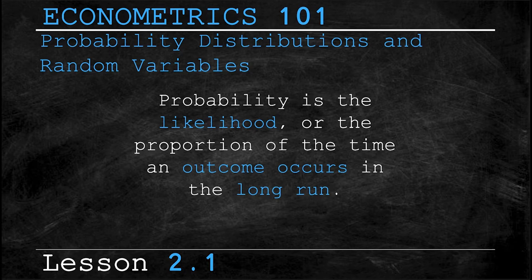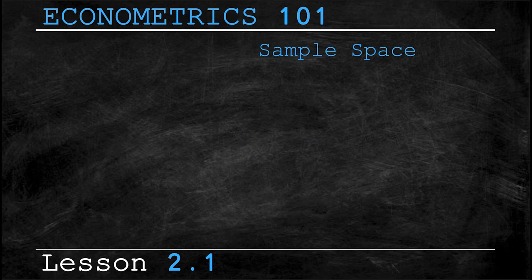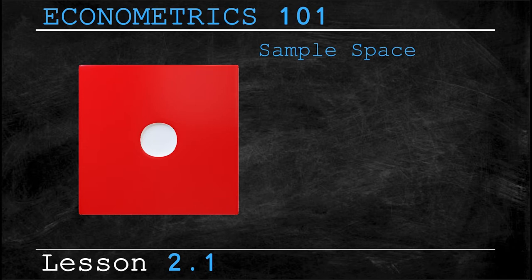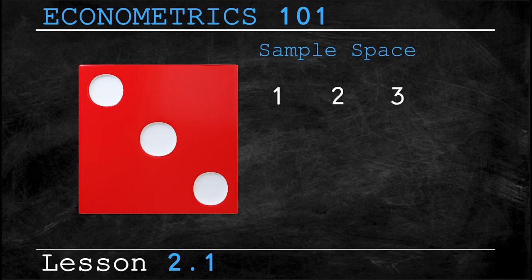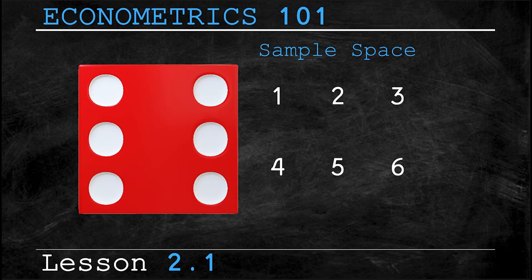Now let's look at something called sample space. Suppose that instead of flipping a coin you roll a six-sided die. Well the sample space is simply the collection of outcomes of your roll. So you could roll a one, you could roll a two, you could roll a three, you could roll a four, you could roll a five, and of course you could also roll a six.